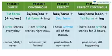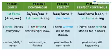Moving on to the next tense — the present continuous tense. This one tells you about an action that has been started but is not yet complete. For example: 'I am writing stories right now.' In this case, you add an ING at the end of the first form of the verb, and these sentences will usually have is, am, or are.